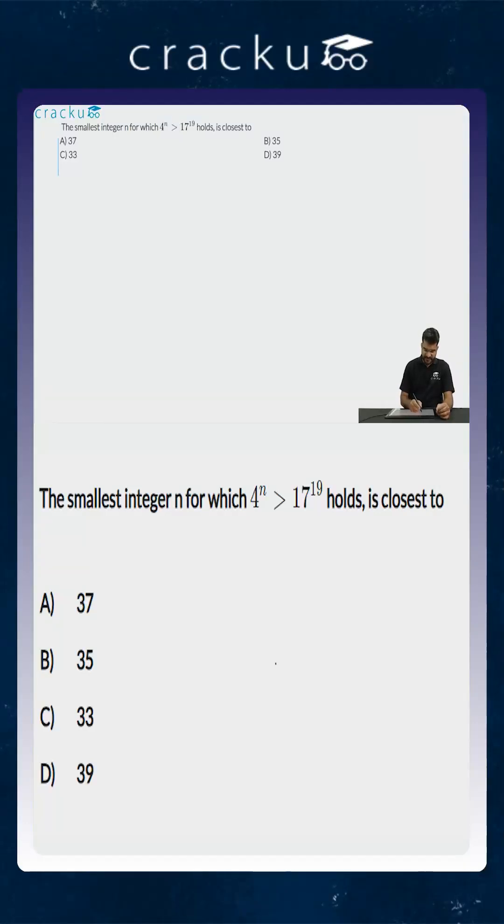In this question we are required to find out the smallest integer n for which 4 to the power n is greater than 17 to the power 19, and we are required to find out that smallest integer is closest to which of the following options.